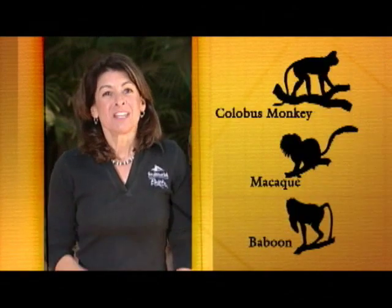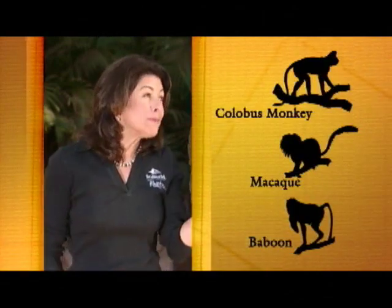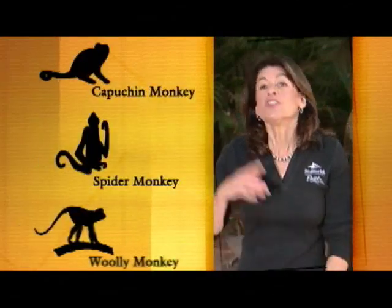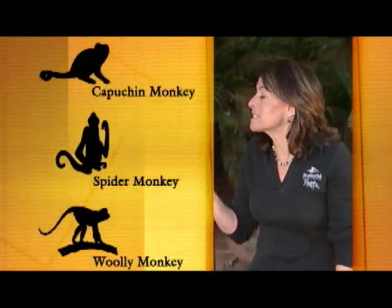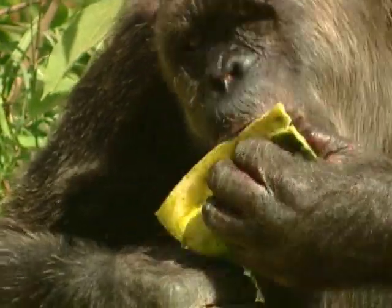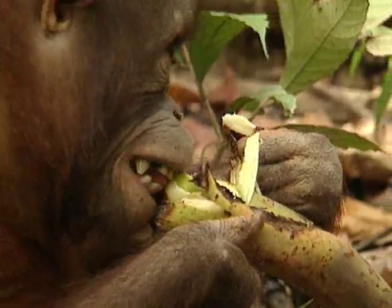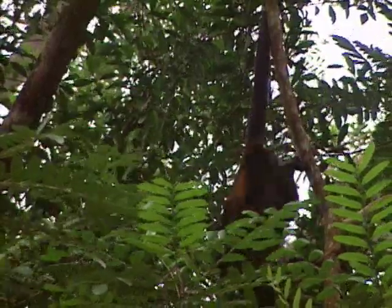Let's start with the monkeys. You've got your old world monkeys coming from Europe, Asia, and Africa, and your new world monkeys coming from the Americas. The obvious differences between old and new world monkeys have to do with the shape of their noses, the number of teeth, the range of their territory, and tail usage. Most new world monkeys can use their tails for grasping at branches — they have prehensile tails.